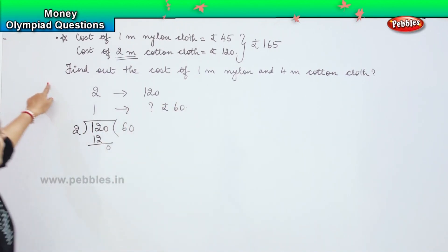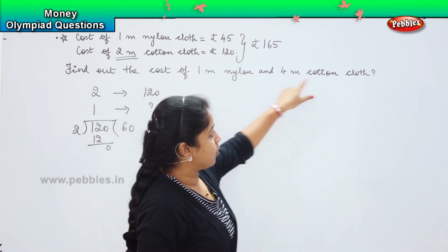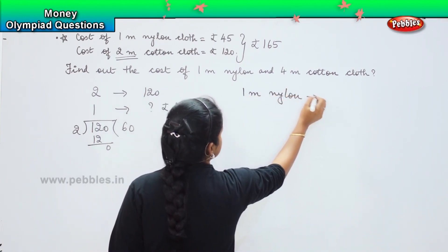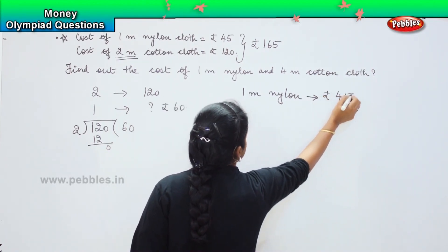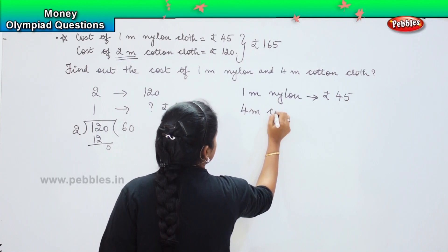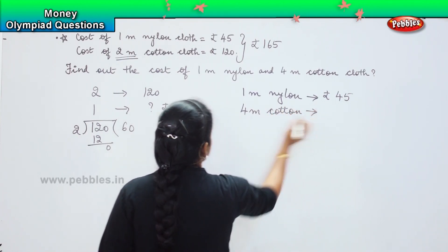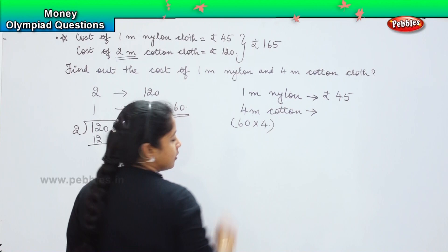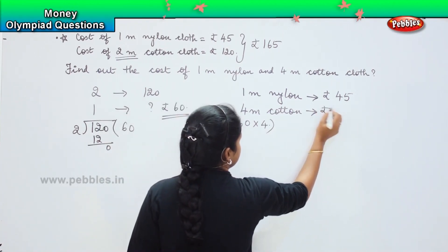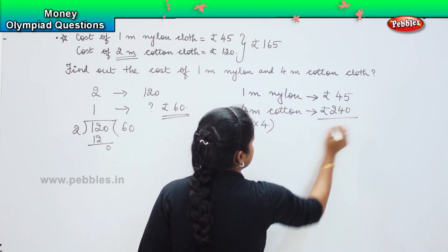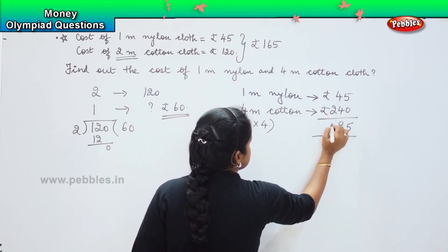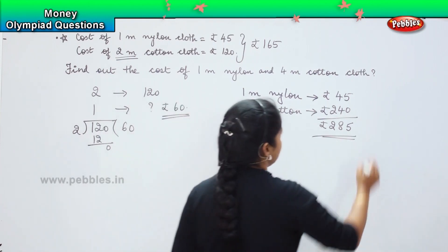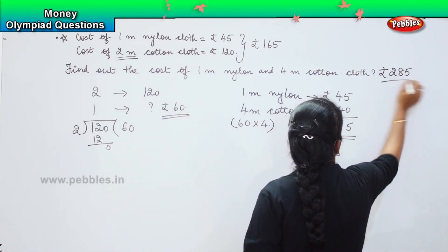They are asking to find out the cost of 1 meter nylon cloth and 4 meter cotton cloth. 1 meter nylon is 45. For 4 meter cotton cloth, we just found 1 meter costs 60, so 4 meters will be 60 into 4, which is rupees 240. Adding together: 4 plus 4 is 8 and 2, so this will cost rupees 285. The answer is 285.